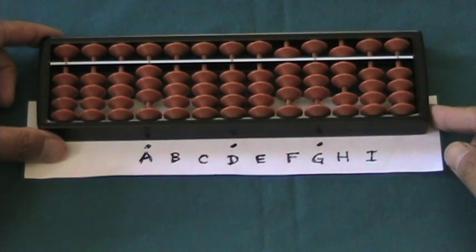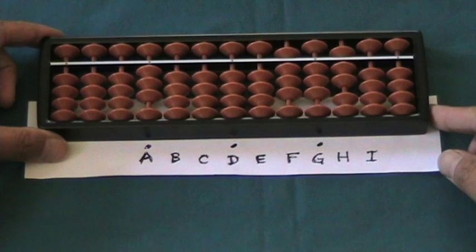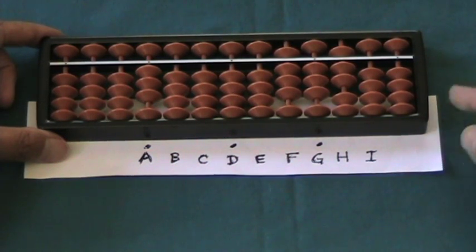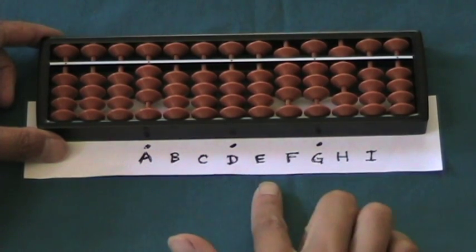We could also have set the dividend first and the divisor afterwards. In either case, we are leaving four vacant rods between the divisor and the dividend.